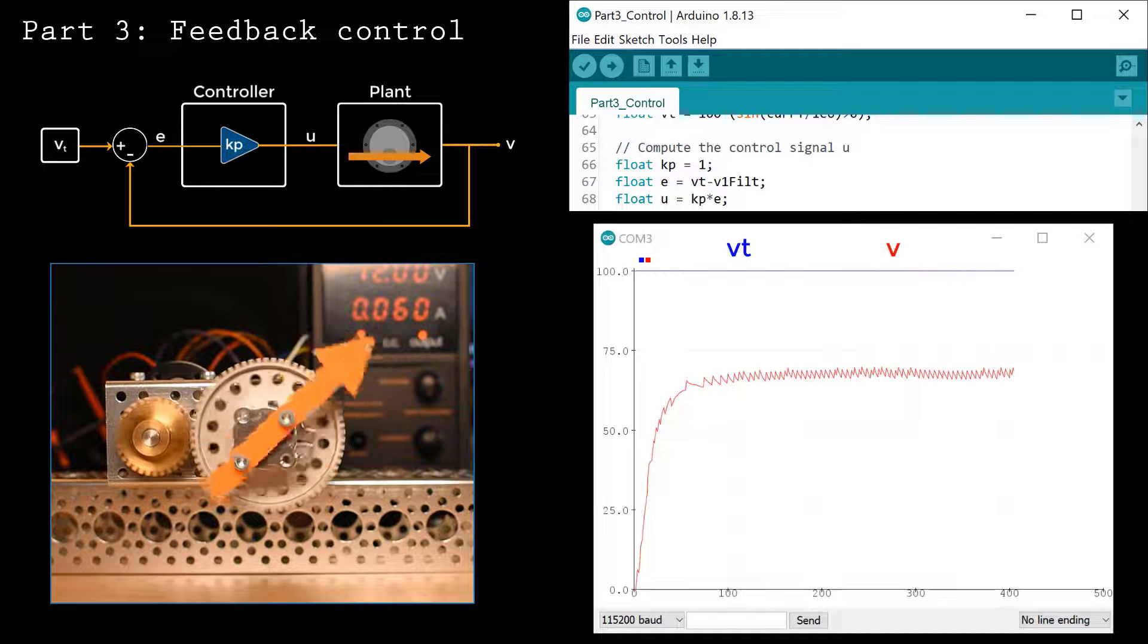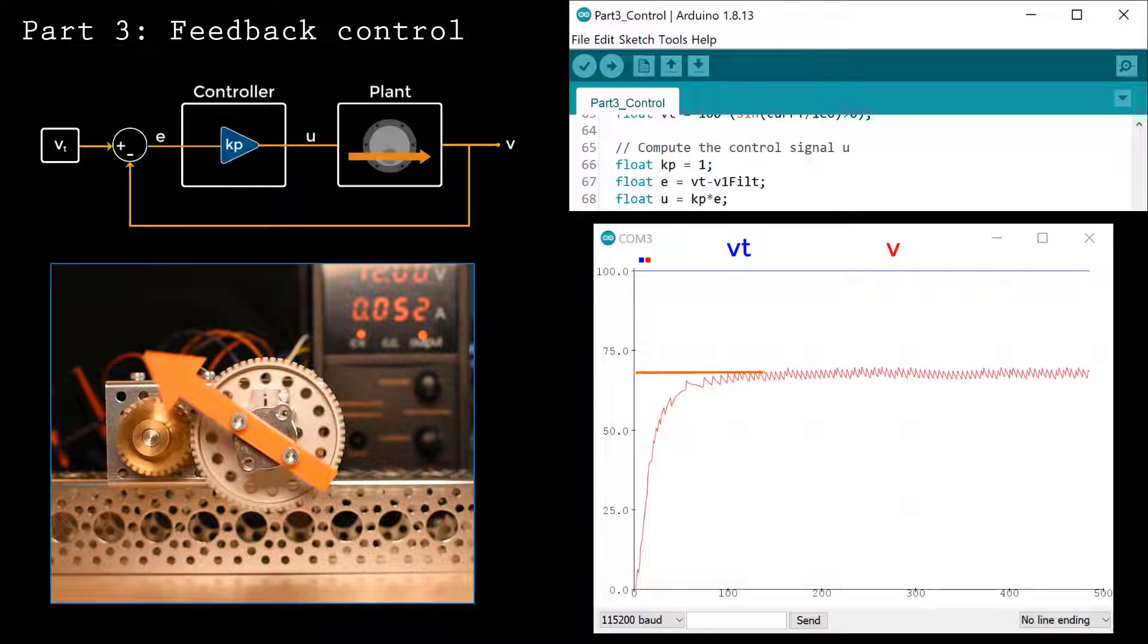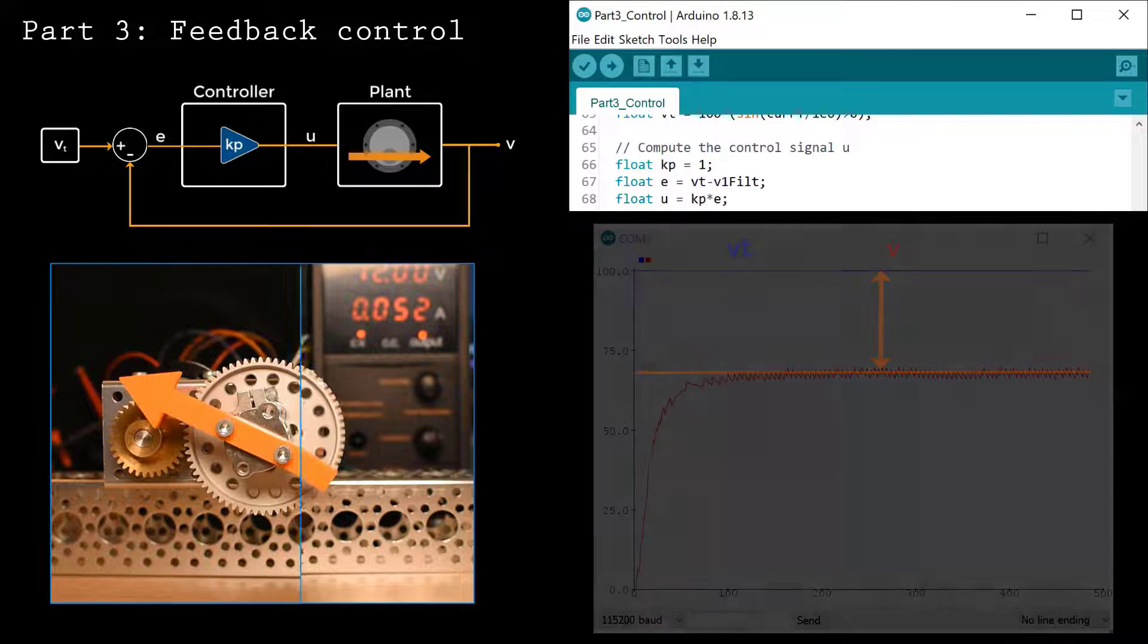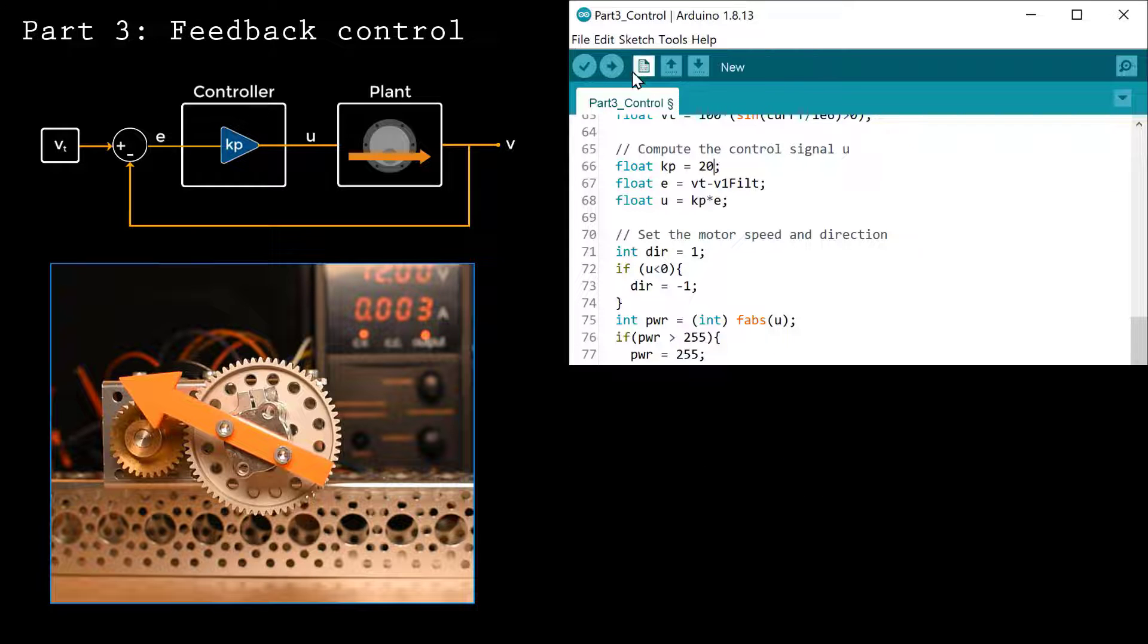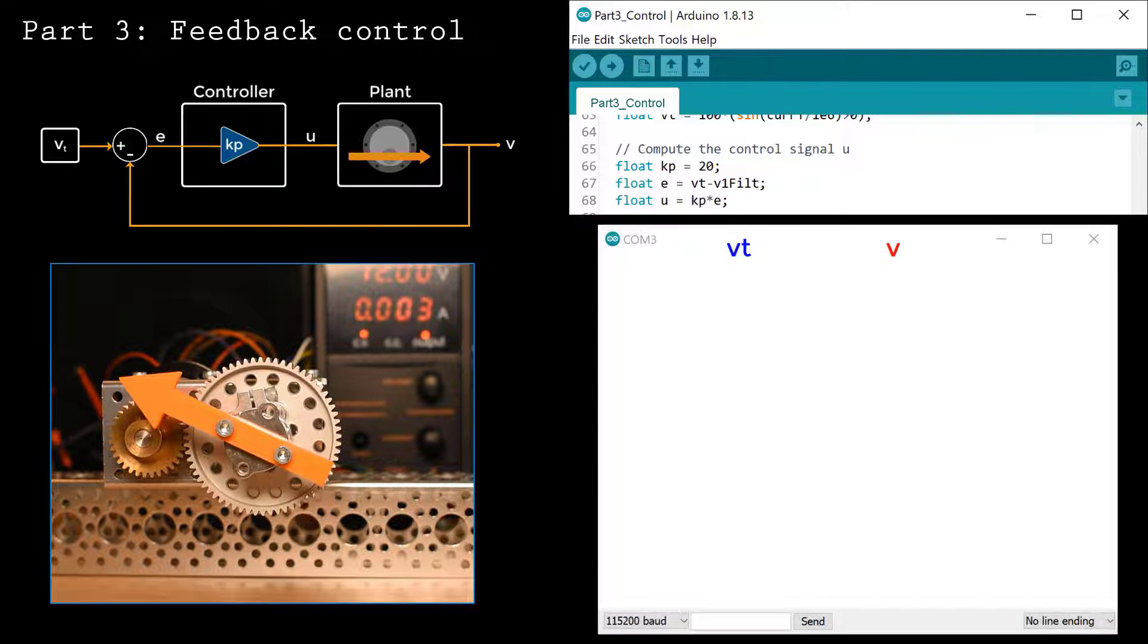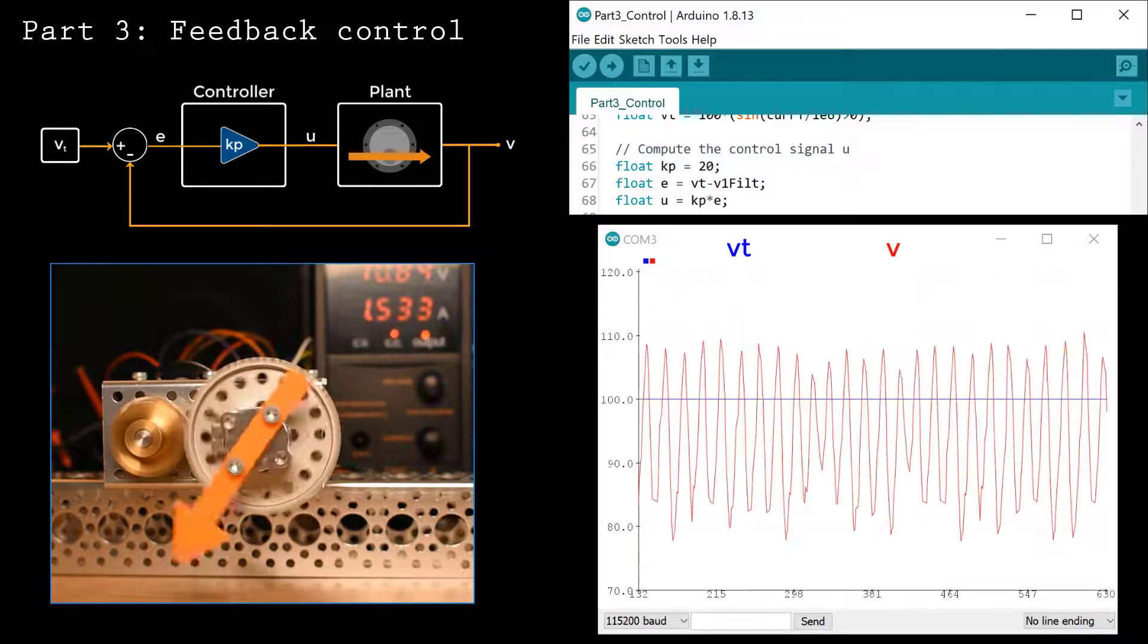Cap the PWM signal at 255. We're ready to test the P controller. With this value of Kp, the motor responds a little slowly and is about 30 RPMs below the 100 RPM target. This indicates that not enough voltage is being applied to the motor, so the gain Kp is too small. Let's increase Kp to 20 and see how the system responds.